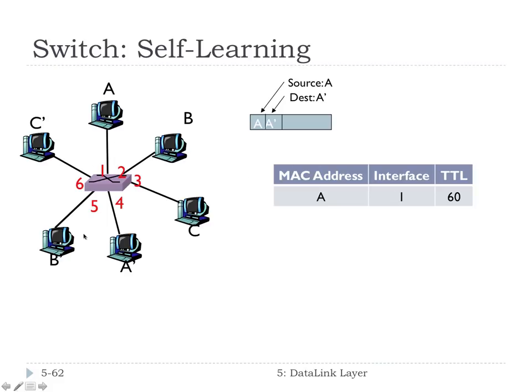How is it going to find out where this frame goes between 2, 3, 4, 5, and 6 when it doesn't know? Initially, this is the only thing that's in the table. All it knows is that A is on one. The switch has to know which port or which outgoing link is A prime on. So if we don't know where somebody is, what are we going to have to do? Right, broadcast it to everybody else.